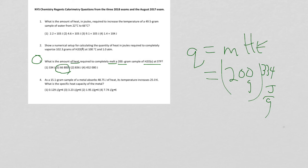For question four, let's take a look at question four. I have a 15.1 gram sample of a metal that's absorbing 48.75 joules of heat. So heat, I'm using Q again. Temperature increases 25 Kelvin. What is the specific heat capacity of the metal?